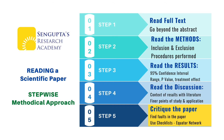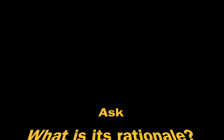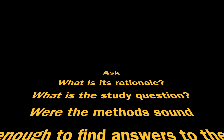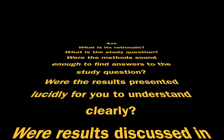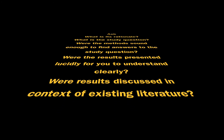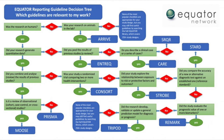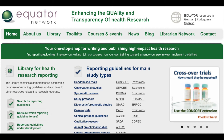The last step in reading scientific research papers is to critique the paper. What is its rationale? What is the study question? Were the methods sound enough to find the answers? Were results presented lucidly? Were results discussed in context of existing literature? Once you have positive answers to all these, you are ready to apply the results to your patients. You can also use internationally accepted checklists to evaluate papers thoroughly. I recommend everyone to go through equatornetwork.org and try this exercise at least once.